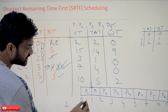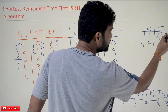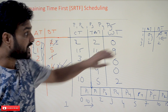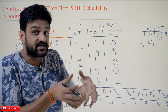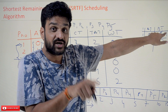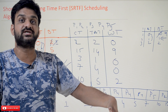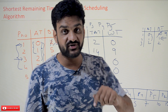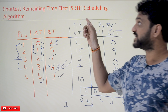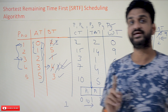In SRTF this is not the case because it is a preemptive algorithm. If P1 enters the running state, it only executes for one unit of time, after which its remaining time becomes 9. Then P2 arrives and among P1 and P2 we choose the one with the lowest burst time, which is P2 — so P1 is not continued. In SJF, once a process enters the running state you must wait until it completes, which is the convoy effect. In SRTF there is no possibility of convoy effect. This is all about Shortest Remaining Time First — hope you got clarity on this.